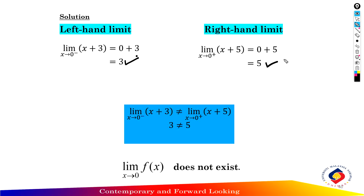Comparing the left hand limit and the right hand limit: the limit as x approaches 0 of x plus 3 gives a left hand limit of 3, and the limit as x approaches 0 of x plus 5 gives a right hand limit of 5. The conclusion is that the limit of f(x) does not exist because the left hand limit and right hand limit are not the same — they approach different values from both sides.